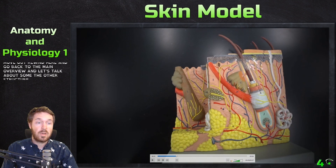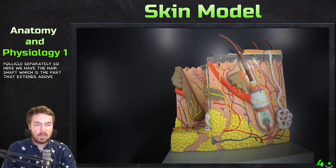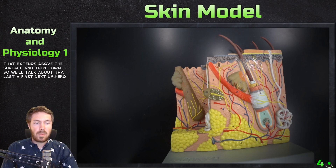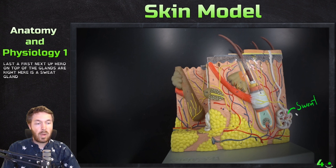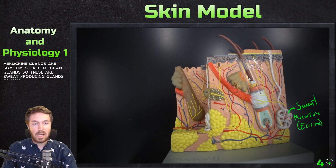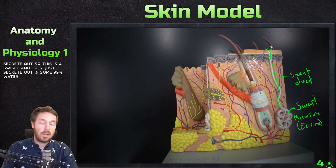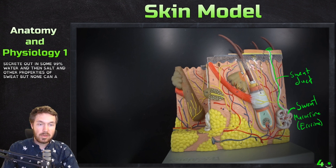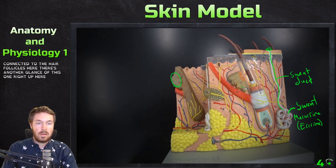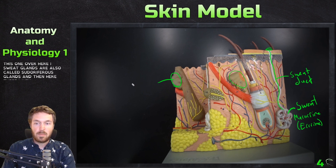Now let's look at some other structures. The hair shaft extends above the surface, but we'll cover that last. Here we have a sweat gland — sweat glands are also called merocrine glands, sometimes called eccrine glands. These sweat-producing glands are not connected directly to a hair follicle; they just secrete out through a sweat duct. Sweat is approximately 99% water plus salt and other properties.